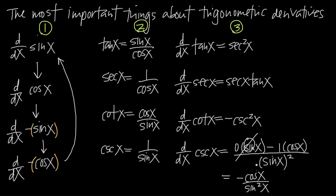We can break this fraction into two separate fractions: negative cosine of x over sine of x, multiplied by 1 over sine of x. We have two factors of sine of x in the denominator, so we split them into their own fractions — keeping negative cosine of x in one and 1 in the other — without changing the overall value.